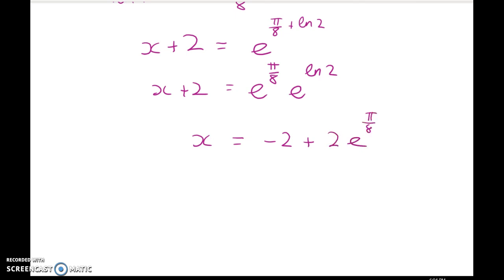And you can do nice factorizing things with that, but you don't need to because we just asked for the approximate value to three decimal places. So if you now chuck that into your calculator, you'll get x is equal to 0.962.